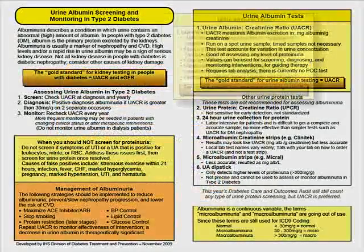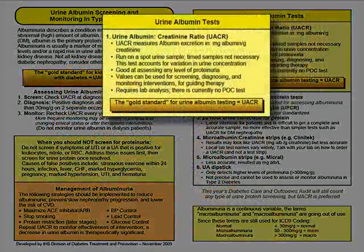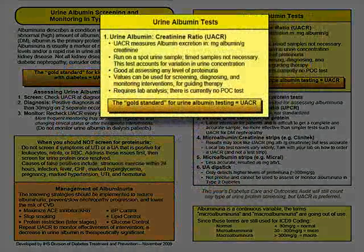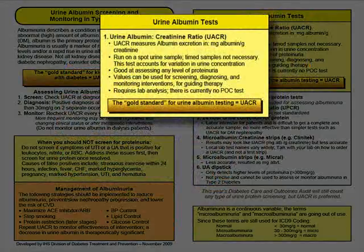The right-hand side of the card lists some of the tests still being used to evaluate urine protein, and compares them to the test we all should be using — the UACR.